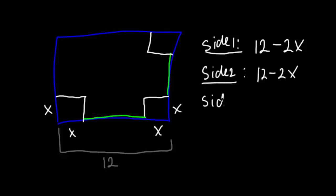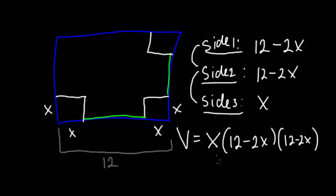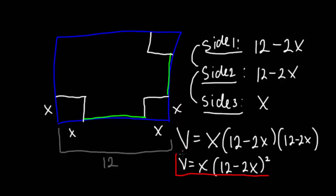Side number 3 is our height, which is just x. Now, volume equals side 1 times side 2 times side 3 — in other words, height multiplied by first side multiplied by second side. We can rewrite this in an easier format as x multiplied by (12 minus 2x) squared. And this right here is our volume formula for this shape. We're looking for the highest possible volume by finding the right value of x.